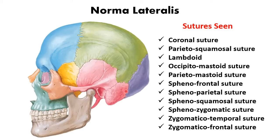The occipitomastoid suture lies between the occipital and the mastoid part of the temporal bone. The parietomastoid suture lies between the parietal and the mastoid process of the temporal bone. The sphenofrontal suture lies between the sphenoid and the frontal bone.